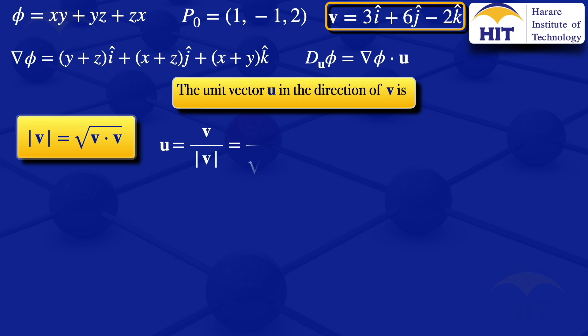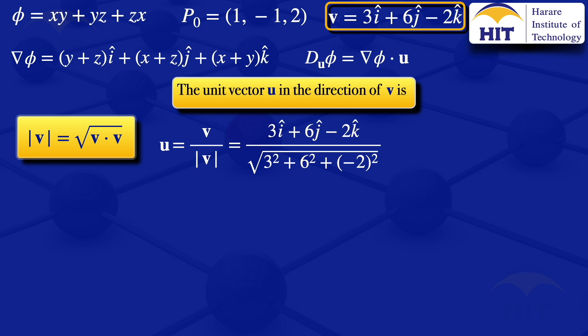So û = (3i + 6j - 2k) divided by the square root of 3² + 6² + (-2)². In the denominator we have 9 + 36 + 4 = 49, and the square root of 49 is 7. So our unit vector is (3/7)i + (6/7)j - (2/7)k.